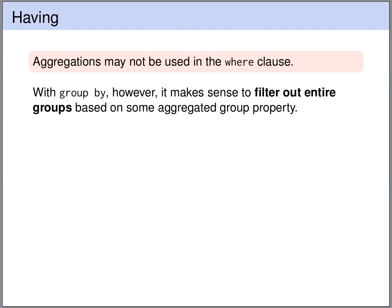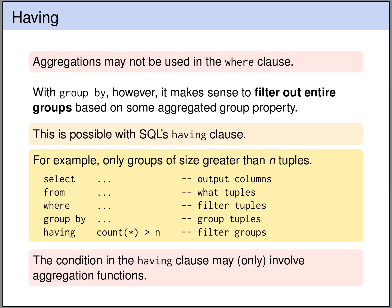Aggregations may not be used in the WHERE clause — the WHERE clause only refers to a single row. However, if we are using GROUP BY, we are partitioning our table into groups, and it makes sense to filter out groups based on some aggregated property. This can be done in SQL using the HAVING clause. The structure of our SQL queries is now: SELECT FROM WHERE, then after the WHERE is evaluated, the GROUP BY is evaluated and rows are partitioned into groups, then the HAVING clause is evaluated where we are allowed to use aggregation functions.